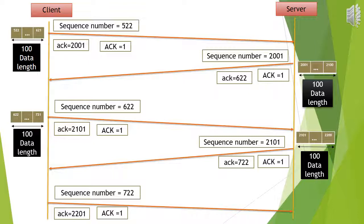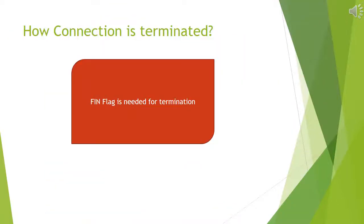Again, the client requests data with 100-byte length: sequence number sent is 622 and acknowledgement will be 2001 + 100 = 2101, with ACK flag also set. The server replies with sequence number 2101 and acknowledgement 622 + 100 = 722, with ACK flag set. The client then sends the next sequence number 722 and acknowledgement 2201 with ACK flag equals 1.